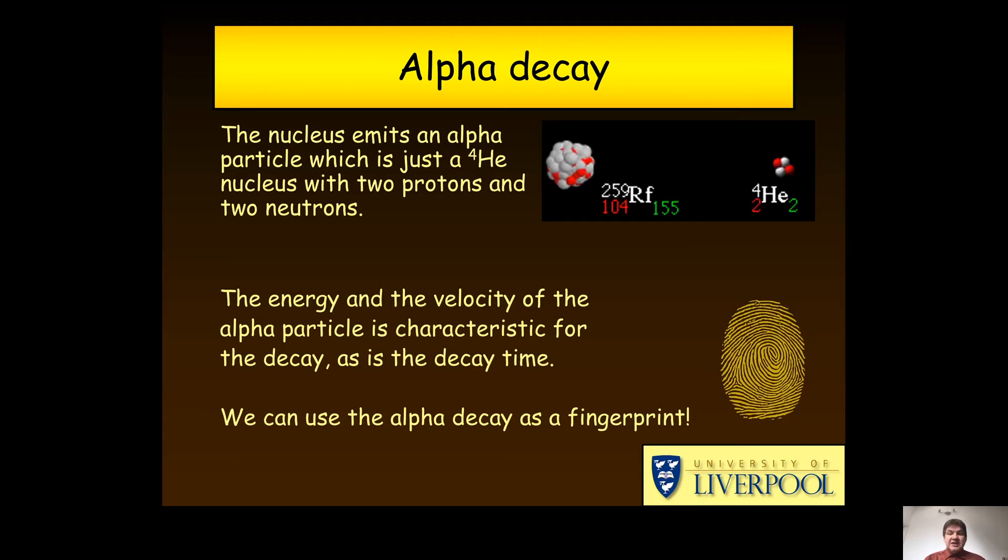So when we observe an alpha decay with this specific energy, after a time compatible with a known half-life, it acts as a very unique fingerprint for the decaying isotope. And that allows us to identify the created elements.